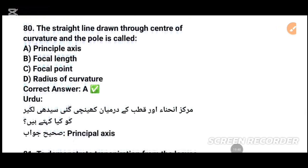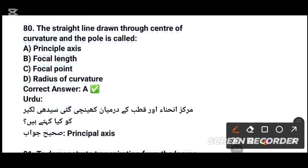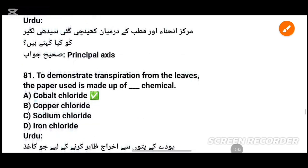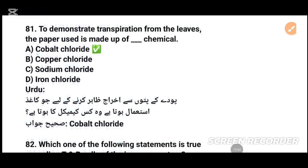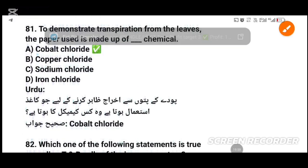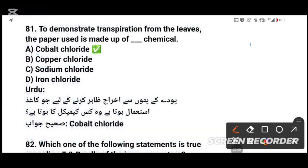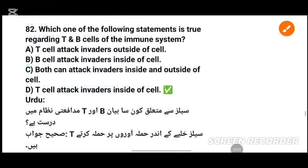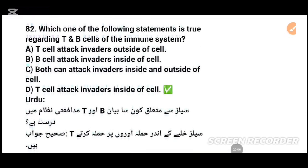MCQs number 81: To demonstrate transpiration from leaves, the paper used is made of cobalt chloride — option A, tick that. MCQs number 82: Which one of the following statements is true regarding T and B cells of the immune system? T cells attack invaders inside the cell — tick option.